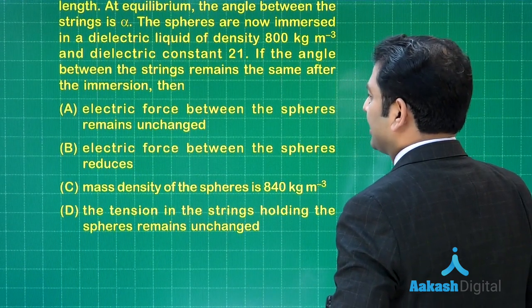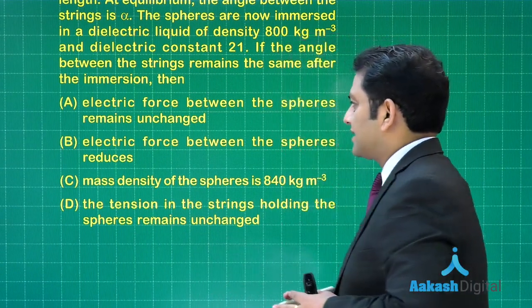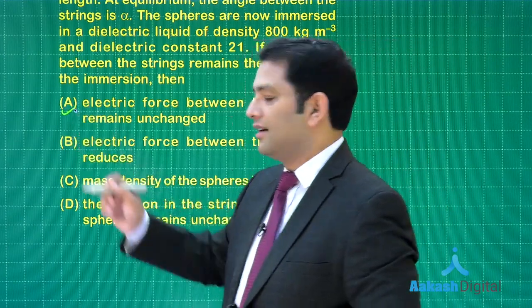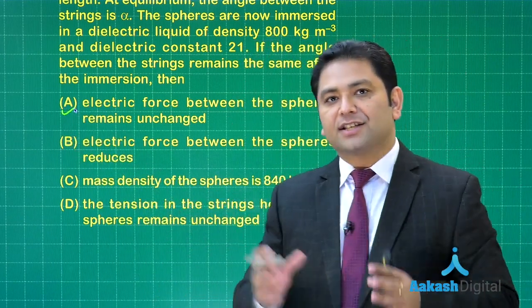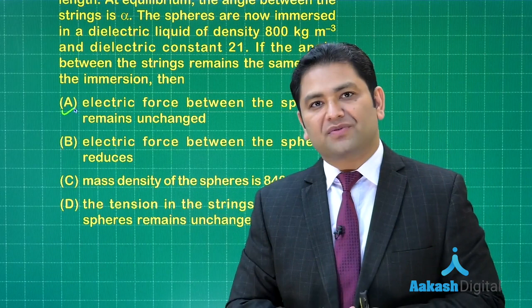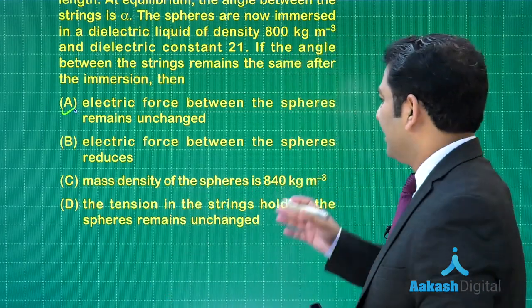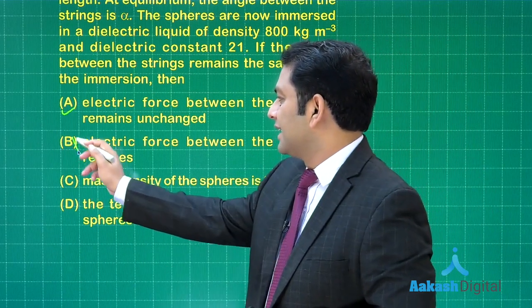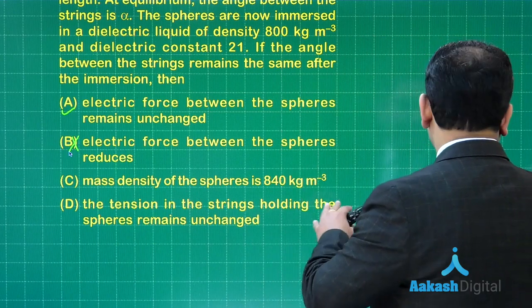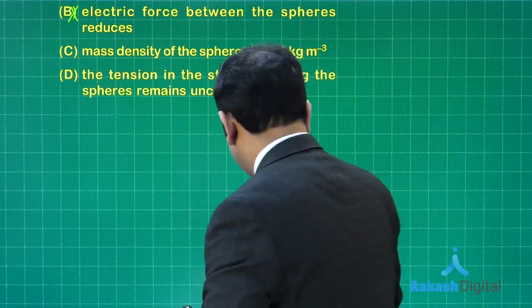From this we need to evaluate four options. First: electric force between the spheres remains unchanged. That's perfectly fine—yes, upon insertion in a dielectric medium the net force decreases, but the force between the two spheres will remain the same. If option A is correct, option B would be incorrect. We need to see the mass density of the sphere and comment on tension.